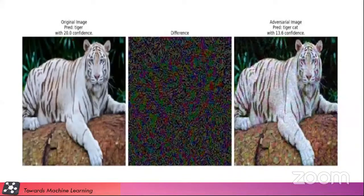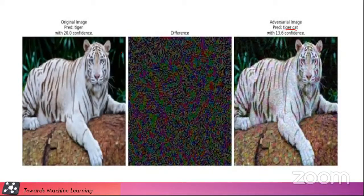And this is a tiger with 20% confidence and the same tiger is classified as tiger cat with 30.6% confidence. So you guys should know about the tiger cat, tiger cat is very far different from the tiger.